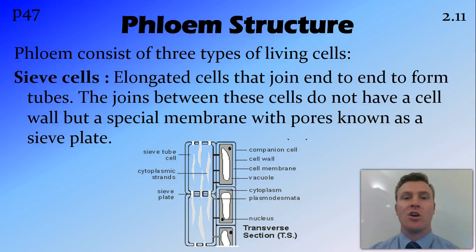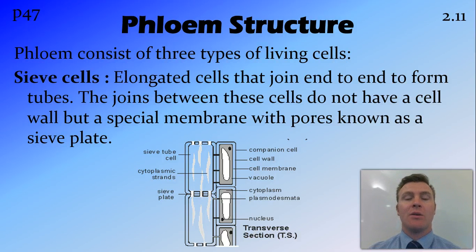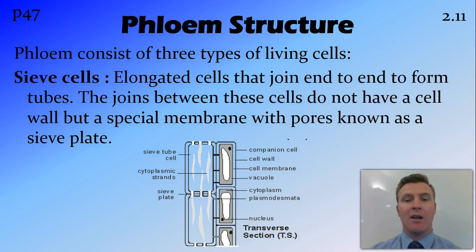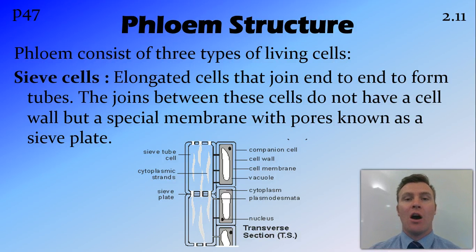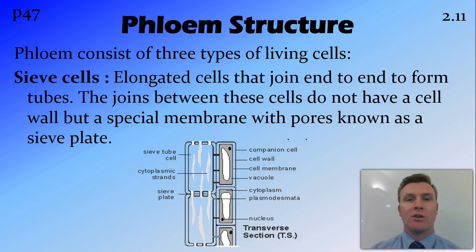Now we're going to look at the structure of phloem. It also consists of three types of cells. The key difference is that phloem cells are living cells, whereas xylem is dead. The main cells that make up the phloem are called sieve cells. These are elongated cells that stack on top of each other end to end. At the joins between sieve cells, rather than a thick cell wall, they have a special membrane called a sieve plate. The sieve plate allows easy movement of sugars and other nutrients across from one cell to the next.